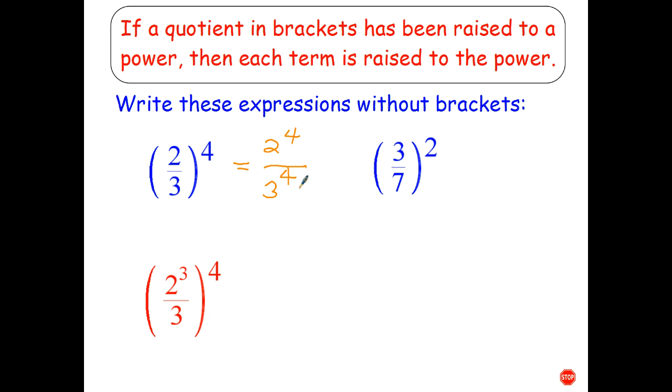Okay have a go at the other two please. Okay similarly this is not a particularly difficult index law. That can be written without brackets as 3 squared over 7 squared.